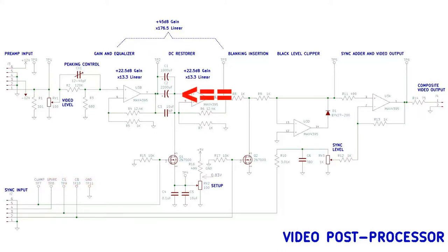It's floating AC-wise over the capacitors. So during blanking, Q1 is turned on and connects the right side of the capacitors to the voltage coming from the setup control.